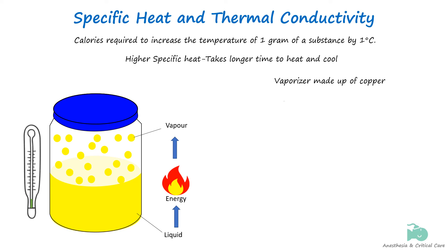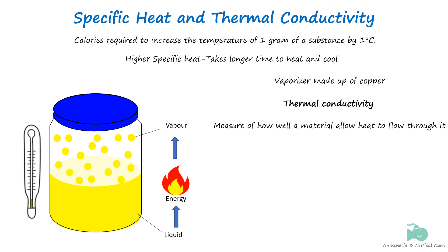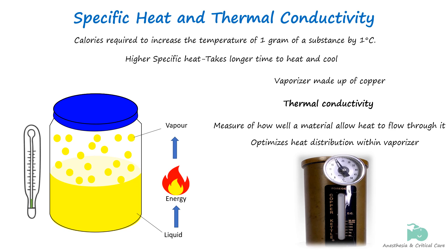Thermal conductivity measures how well a material allows heat to flow through it. Vaporizers are designed using materials with high thermal conductivity, like copper and aluminum, to facilitate efficient heat transfer and quickly distribute heat throughout the vaporizer. This efficiency helps to counteract any cooling effects from the vaporization process.